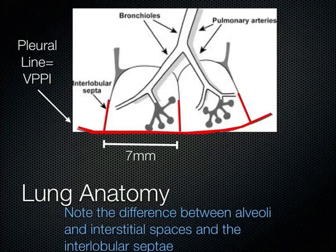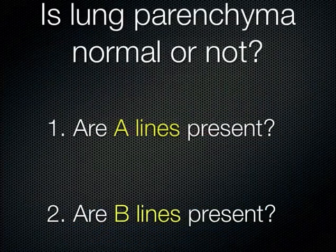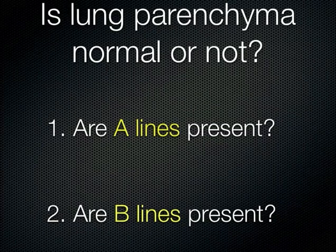Now that we've reviewed what the lung looks like and which probe to use, what you're really interested in is whether the lung is normal or not. The way we assess that is to look for artifacts that are classic in certain situations. One is A-lines and one is B-lines.